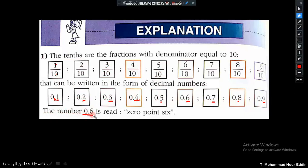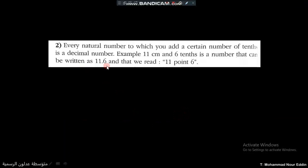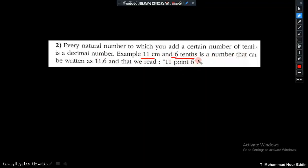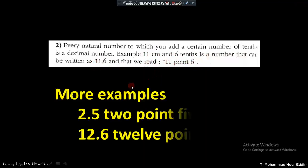The number 0.6 is read as zero point six. Every natural number to which you add a certain number of tenths is a decimal number. For example, eleven centimeters and six tenths is a number that can be written as 11.6. So if I have eleven centimeters and six dashes, or six tenths, or six millimeters, I can write it as a decimal number: eleven point six.